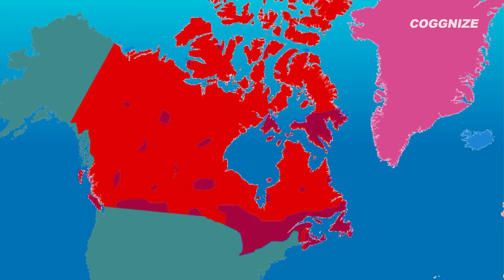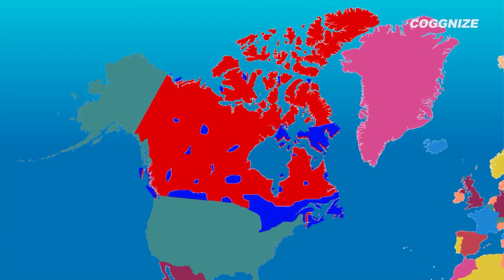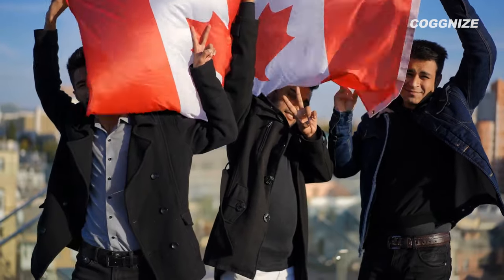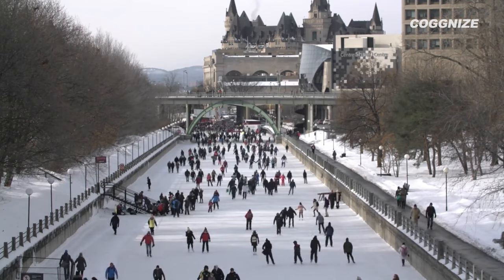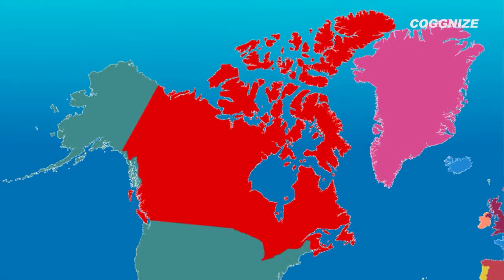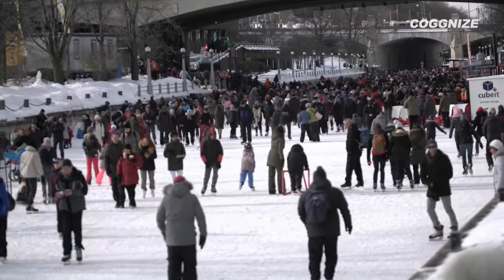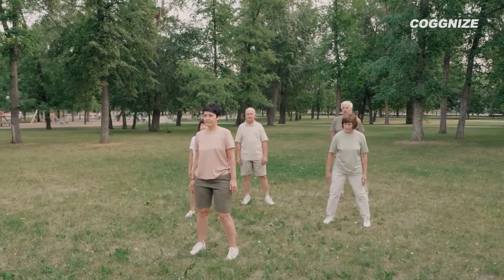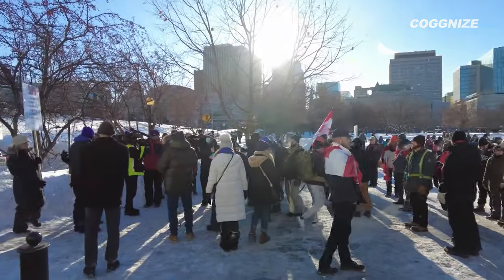If you were to look at a map of Canada with only 75% of the population marked, it would appear that the country is mostly empty. This is because the vast majority of Canadians live in a relatively small area near the US border. More than half of all Canadians — over 50% — live below the 49th parallel, which means they live in the southernmost parts of the country. The population density is much higher in the southern parts, near the US border.